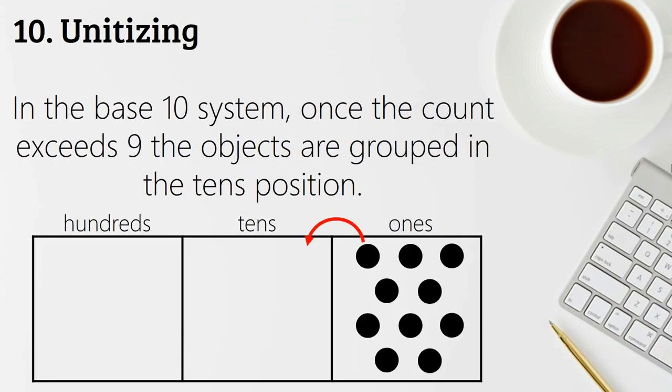And our last counting principle is unitizing. So the best way to talk about this is just talking about the base 10 system. And so once your count exceeds nine, the objects are grouped into the tens position. And you can also if you have numbers then moved into the hundreds position as students get more comfortable with numbers, but making sure that those groups of numbers are now moved into the tens position. And we can really show students this concept by using 10 frames and grouping numbers up on the 10 frame. And then once you have filled a 10 frame, well, now you have one group of 10. And so this really lays the foundation for bigger numbers.